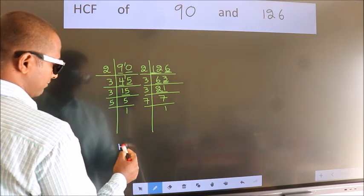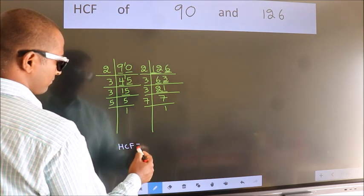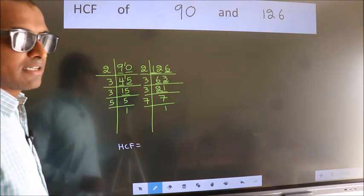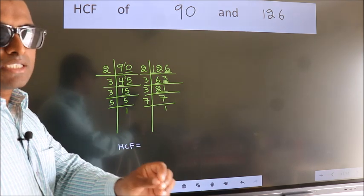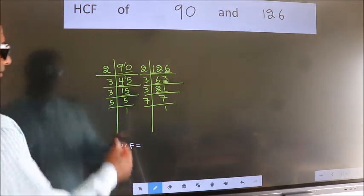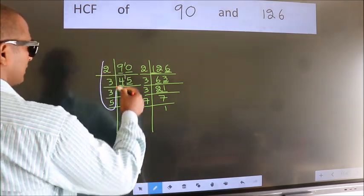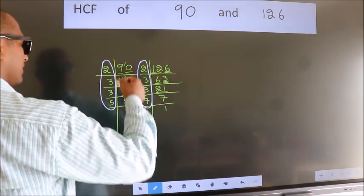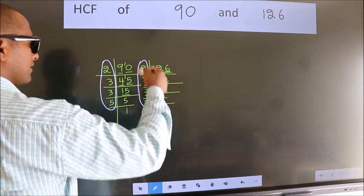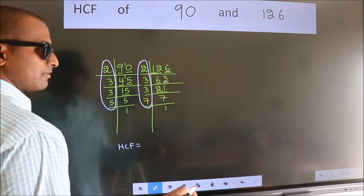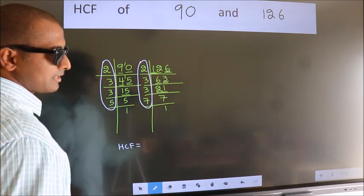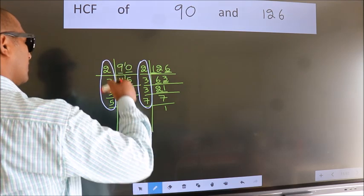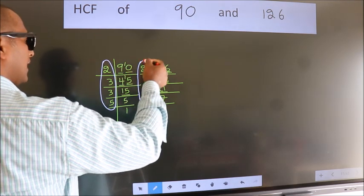Therefore, our HCF is the product of the numbers which should be present over here and also here, here and here. Now let us find the numbers which should be present here and here.